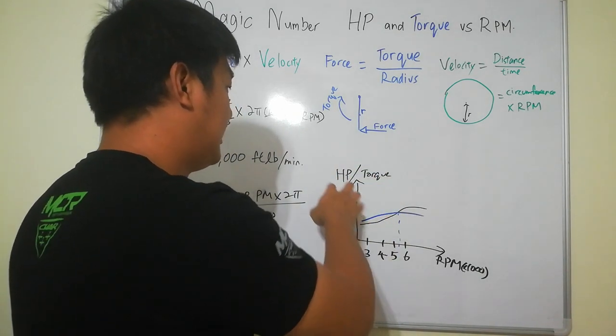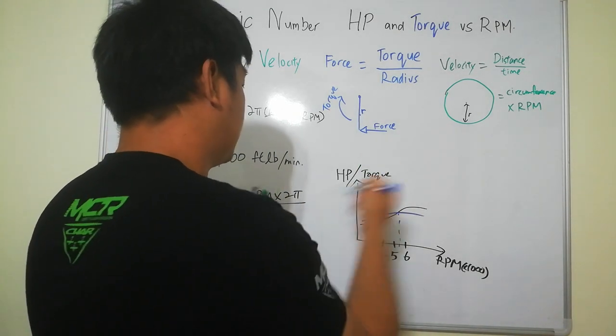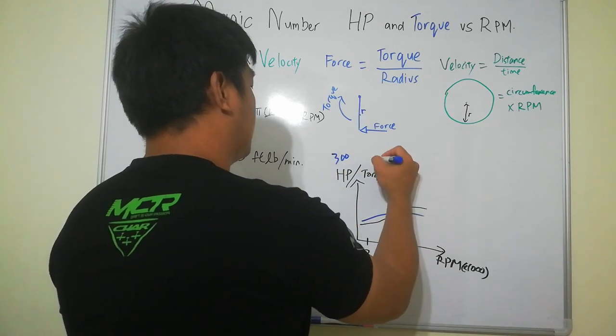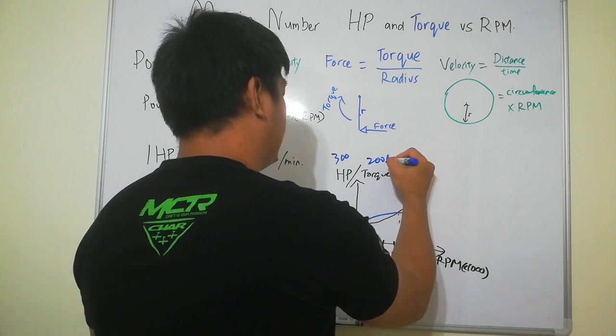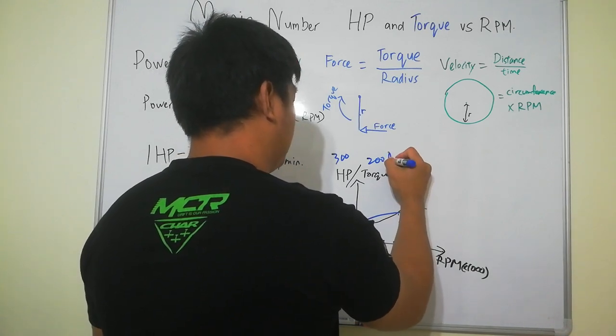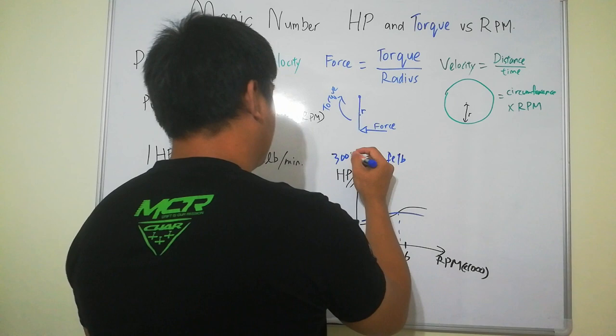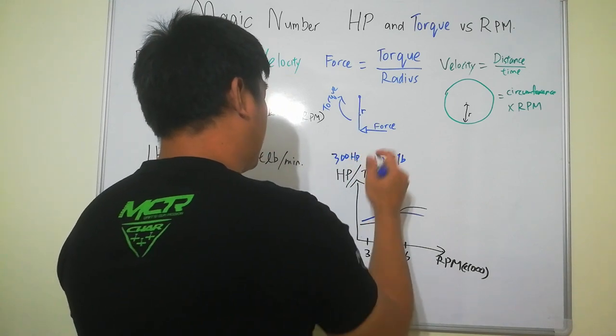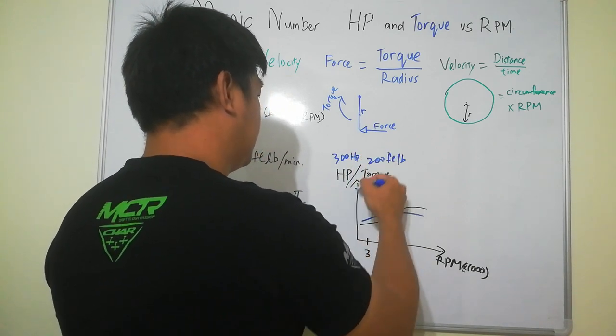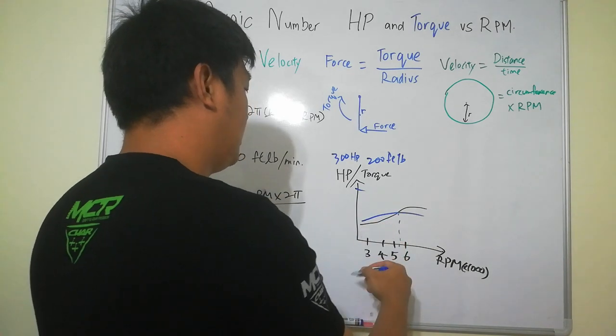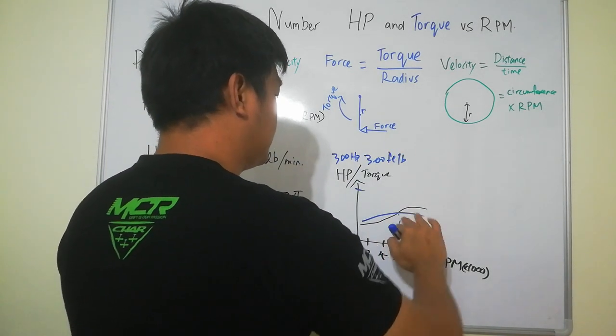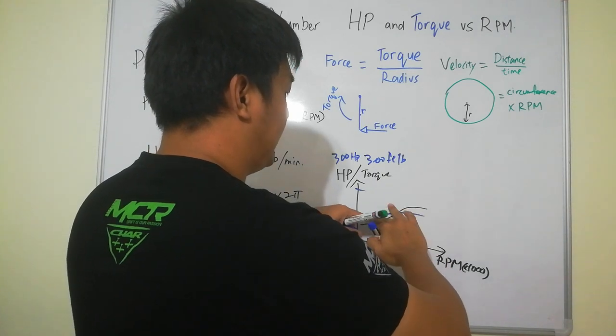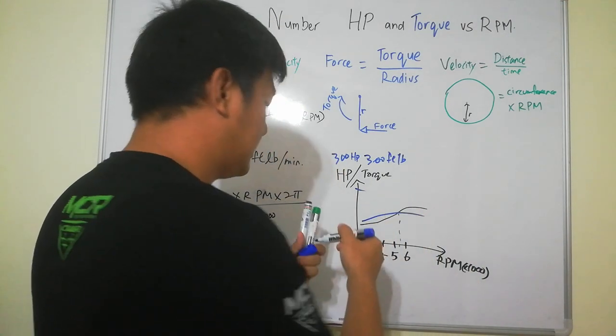It doesn't matter what is the scale for your horsepower or your torque. Your horsepower can be like for example 300 or 200 foot pound. This one is 300 horsepower here is 300 here is 200 foot pound. It will still intersect. If this one is in the 300 so the graph will be slightly flatter but it will still intersect at 5,252 RPM.